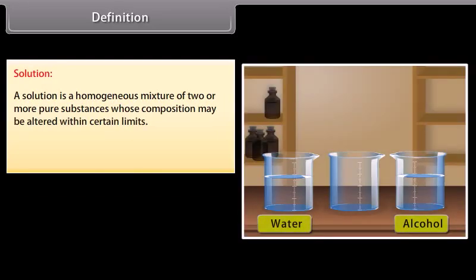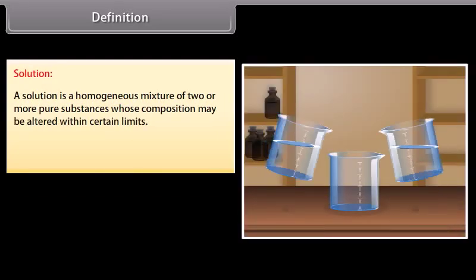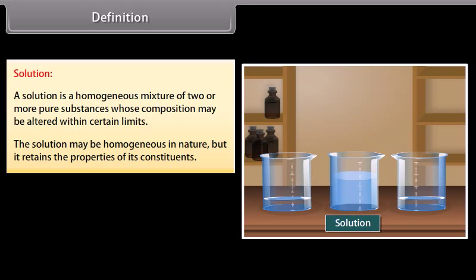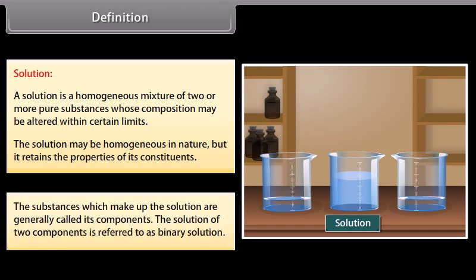A solution is a homogeneous mixture of two or more pure substances whose composition may be altered within certain limits. The solution may be homogeneous in nature but it retains the properties of its constituents. The substances which make up the solution are generally called its components. The solution of two components is referred to as binary solution.